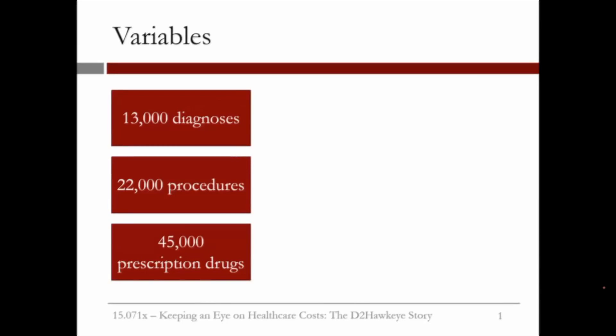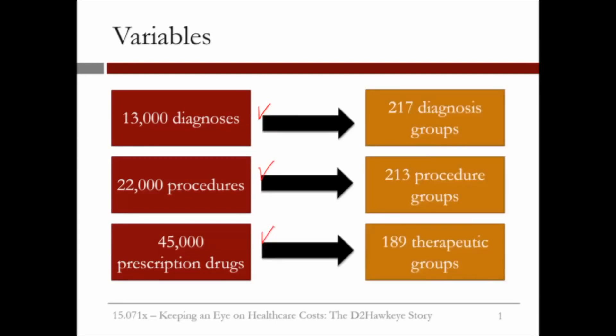To build an analytics model, let us discuss the variables we used. First, we used 13,000 diagnoses — these were the codes for diagnosis that claims data utilize. There were also 22,000 different codes for procedures and 45,000 codes for prescription drugs. To work with this massive amount of variables, we aggregated the variables as follows.